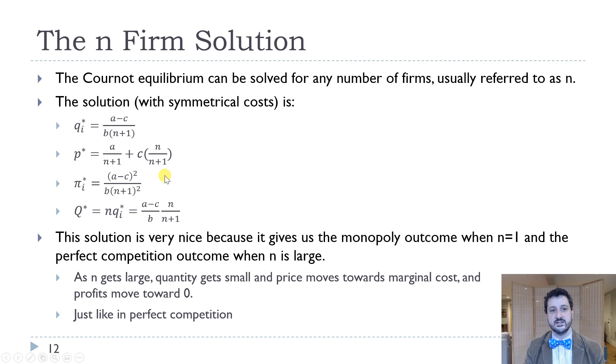And then price is A over N plus 1 plus C times N over N plus 1. So note with prices, N goes up. This first term just gets smaller and smaller. And then this term becomes really close to 1. And so we get a price equal to marginal cost as N gets really large. And similarly, with profit, which is A minus C squared over B times N plus 1 squared, as N gets large, profit goes to 0. And similarly, as N gets large, our total quantity becomes A minus C over B, which is the quantity for perfect competition.